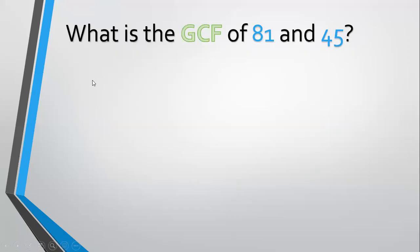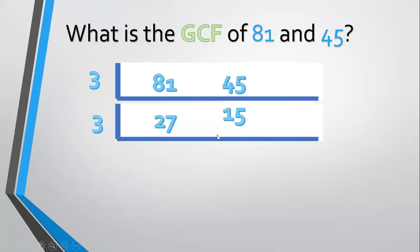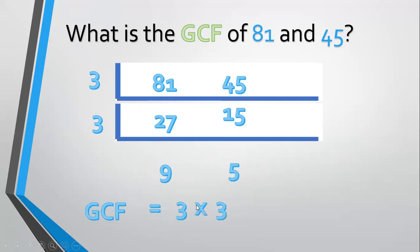Another example, what is the GCF of 81 and 45? Align 81 and 45. Divide by a prime common factor, 3. 81 divided by 3 equals 27. 45 divided by 3 equals 15. Divide again by 3. 27 divided by 3 equals 9. 15 divided by 3 equals 5. 9 and 5 have no prime common factor, so stop. Then the GCF equals 3 times 3 equals 9.